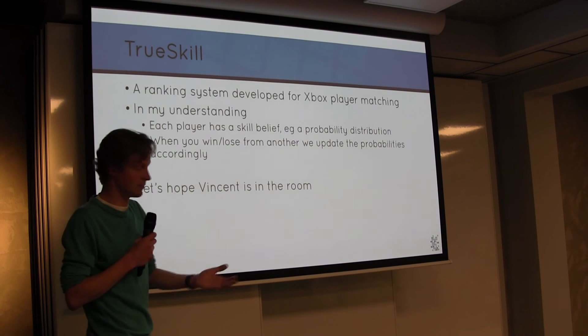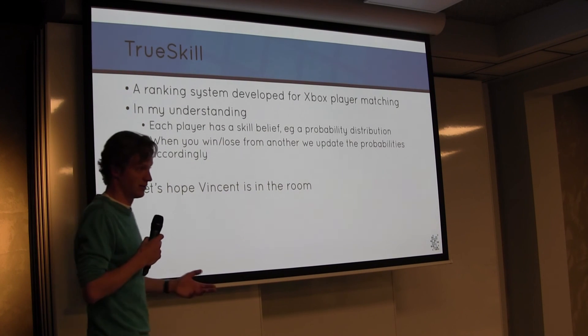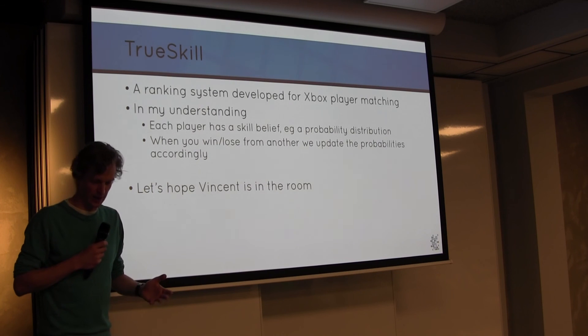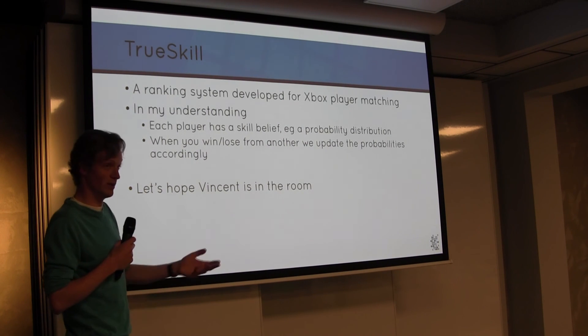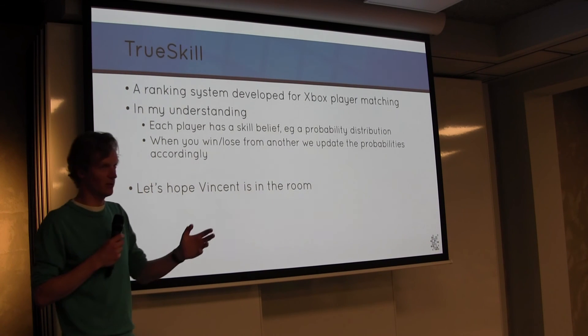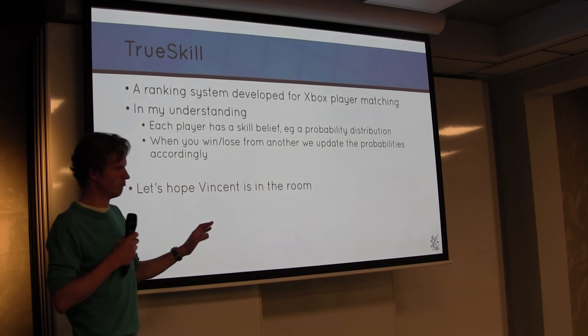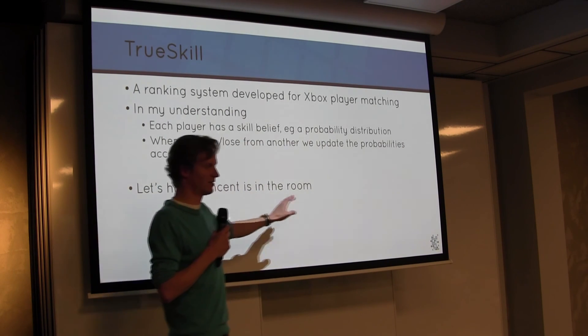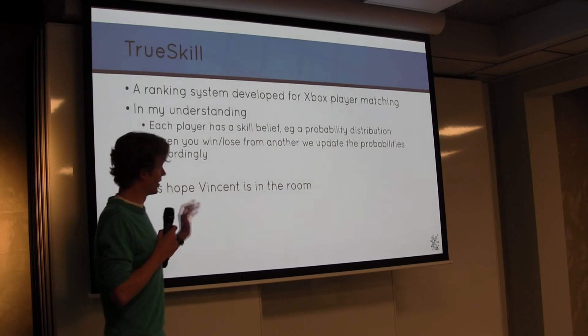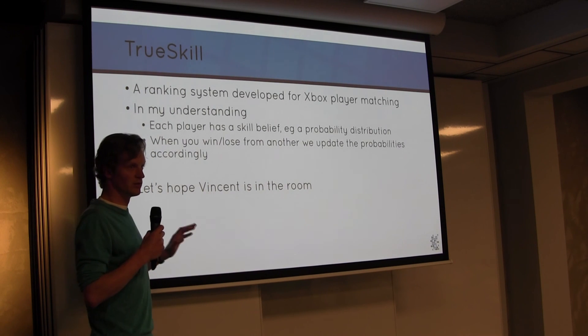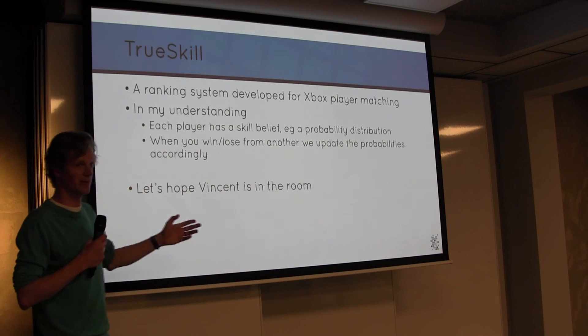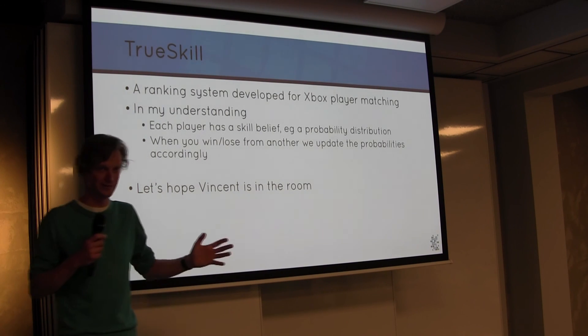And he said, TrueSkill. Something nice. Something developed by Microsoft for the Xbox online, multiplayer. And in my understanding, I read it quite quickly, so I don't really know if it's true. Each player has a belief of skill. It's like a probability distribution. Like this could be a good player, somewhere there. And this guy could be a bit bad. But we really don't know. There's still a bit of a probability curve around it. But when you win or lose from a player, you basically combine those two probability distributions to quickly get new probability distributions. Vincent's not in the room. He's not. So that's unfortunate for you. If you have questions, send them by email, I guess.